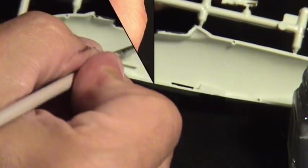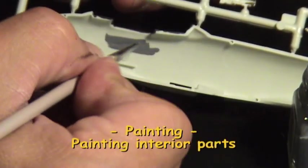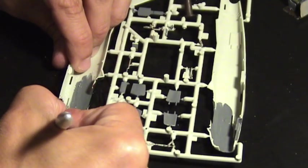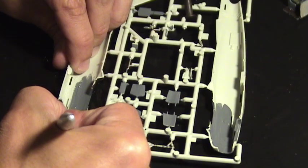Before gluing together the fuselage, we need to paint the interior part of the single-seat cockpit. Only paint the parts that will be visible from the outside.